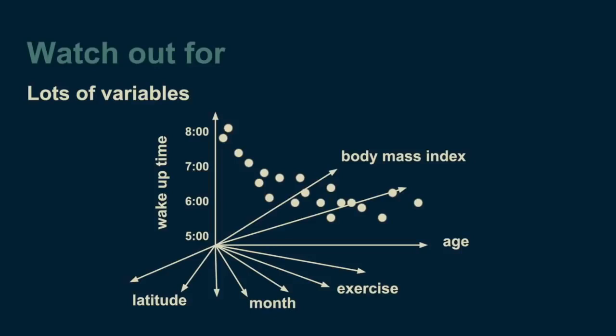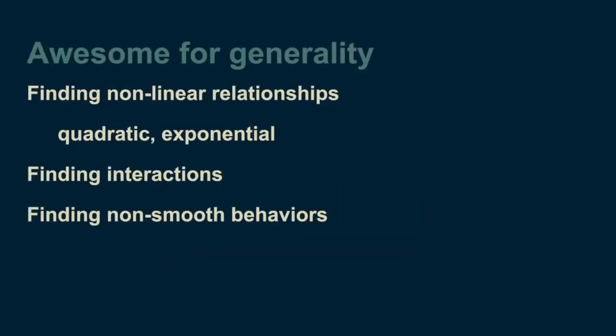As long as you keep your eyes open for places where decision trees might fail, you're free to take advantage of their strengths. Decision trees are fantastic for when you want to make as few assumptions about your data as possible. They're quite general. They can find non-linear relationships between your predictor variables and your target variable, as well as non-linear interactions between predictor variables. Quadratic, exponential, cyclical, and any other relationships can all be revealed as long as you have enough data to support all the necessary cuts. Decision trees can also find non-smooth behaviors — sudden jumps and peaks — that other models like linear regression or artificial neural networks can sometimes hide. There's a good reason that decision trees consistently outperform other methods on data-rich problems.